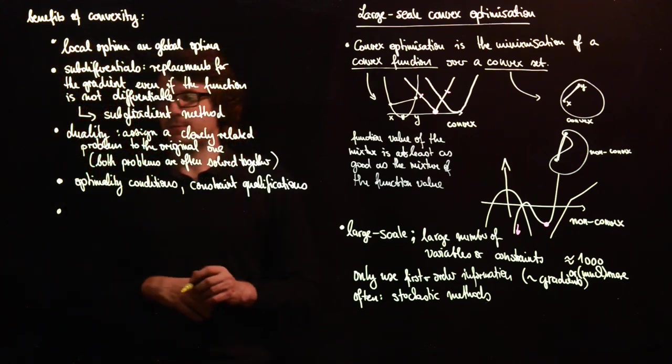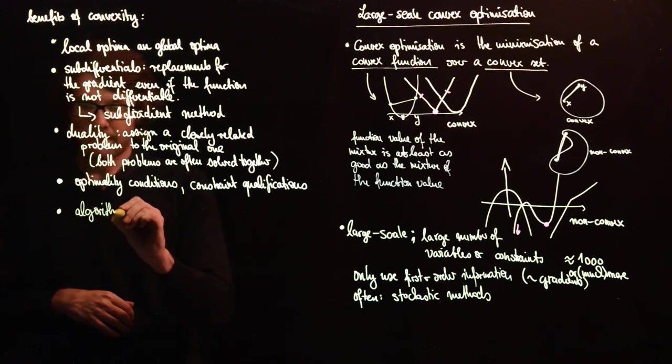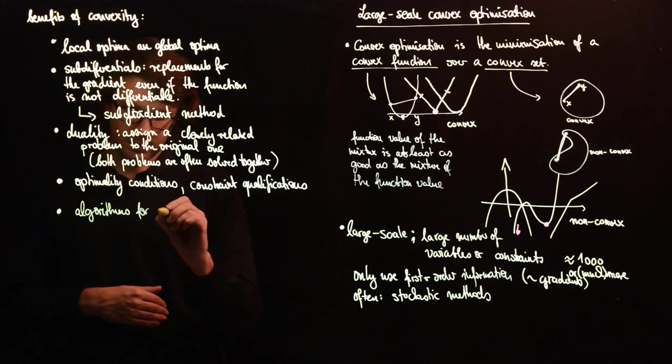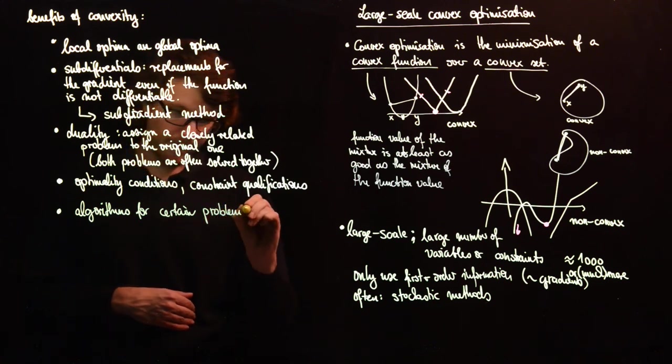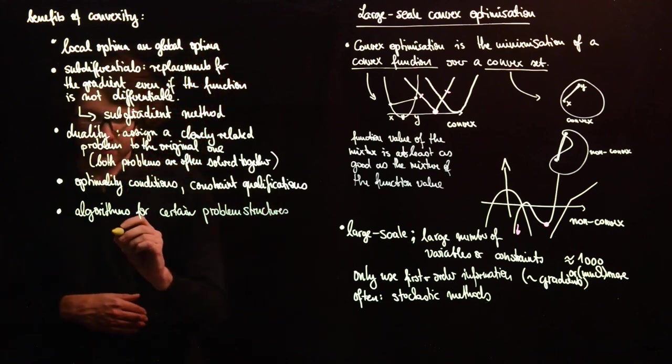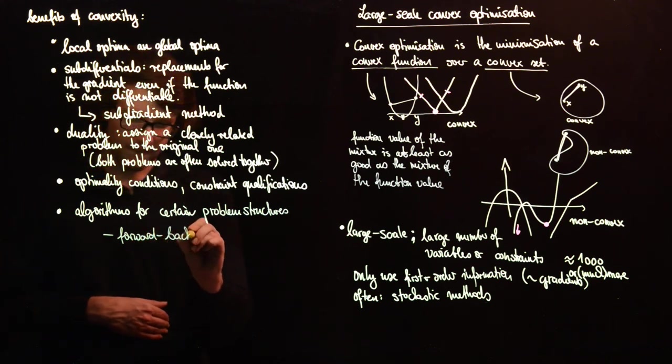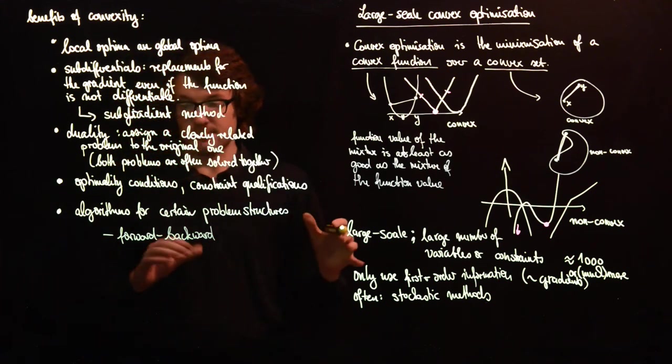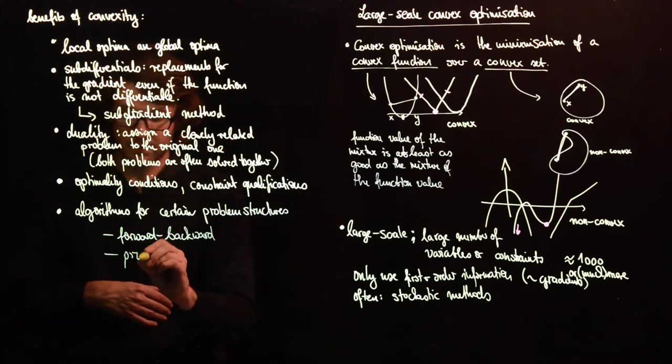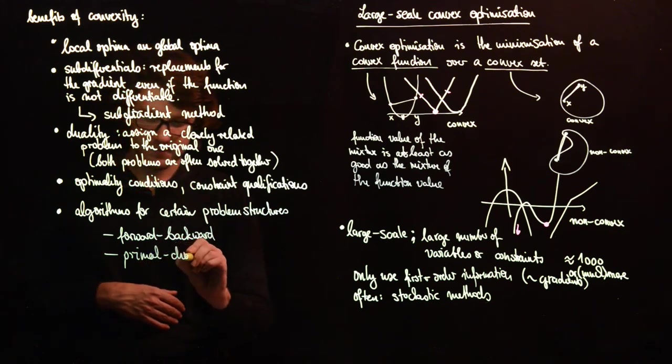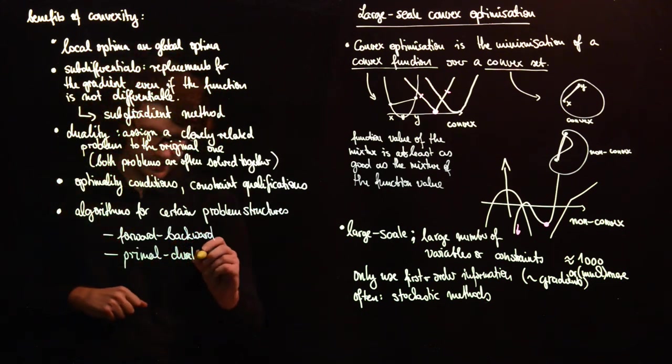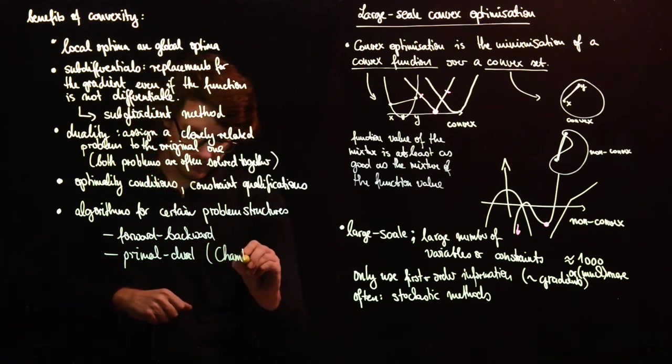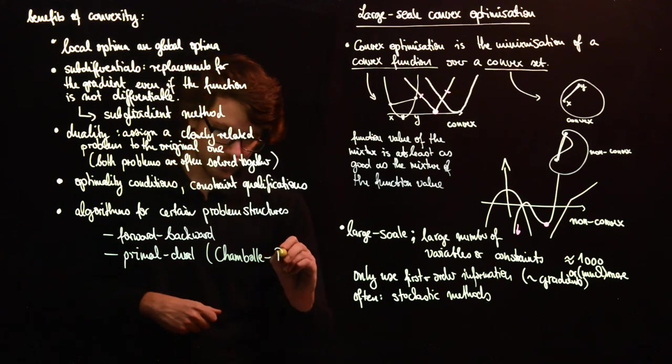Another very big part will be algorithms for certain problem structures. Here we will consider the forward-backward or proximal gradient. We will see some primal-dual algorithms, which come together with this duality. Here in particular we will look at the Chambolle-Pock algorithm.